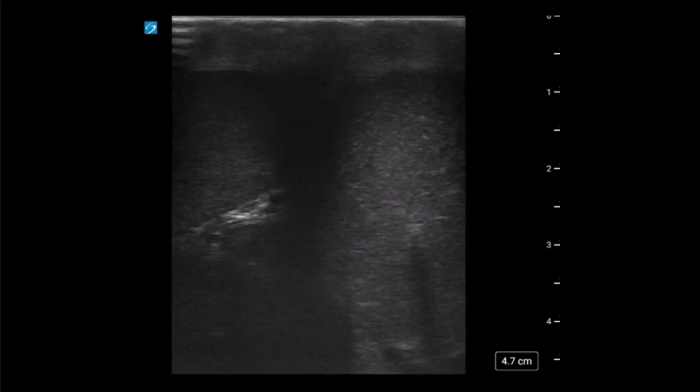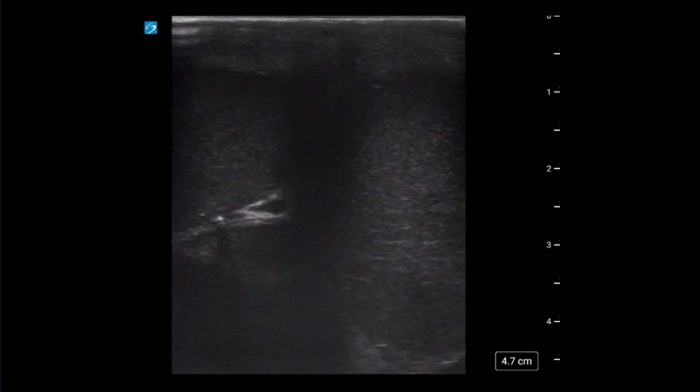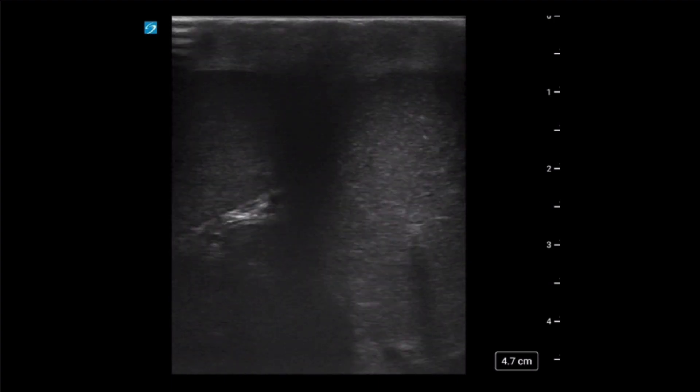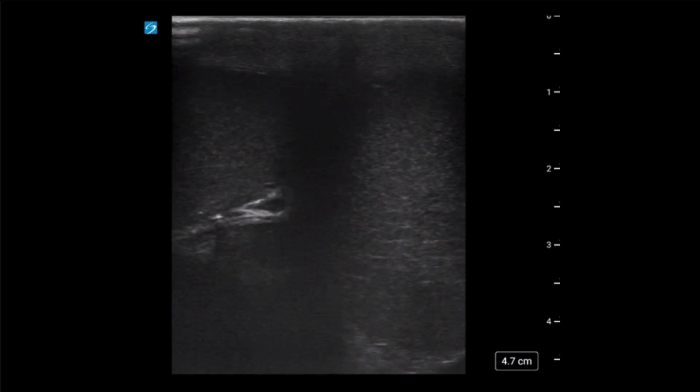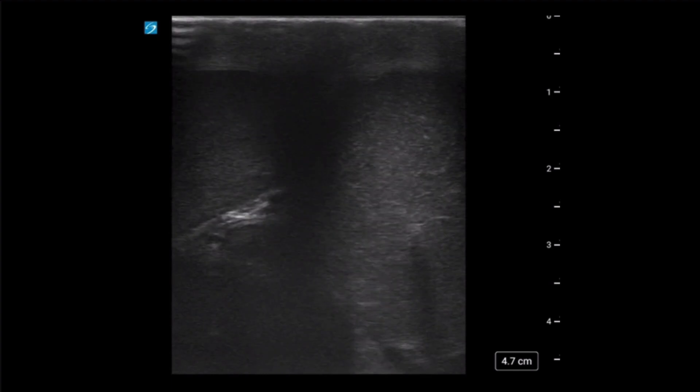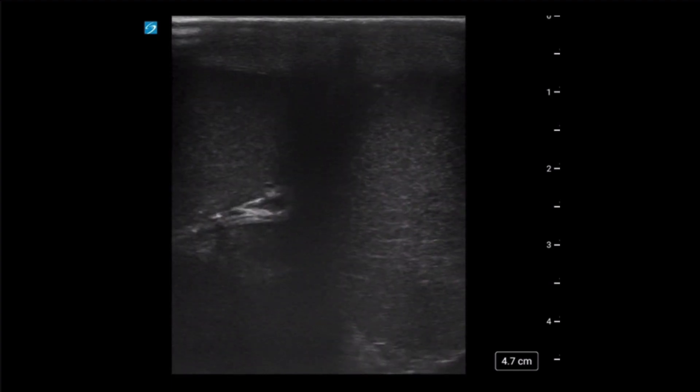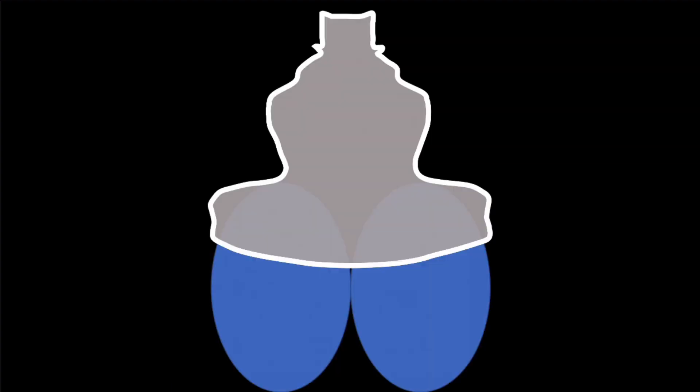In the first image, the linear transducer is utilized to image the bilateral testes in a short axis orientation with the probe placed transverse on the scrotum. A linear transducer is used given the higher resolution offered in this superficial structure. Elevation of the scrotum with a towel can help position the testicles to help with visualization.